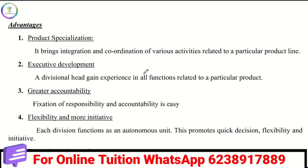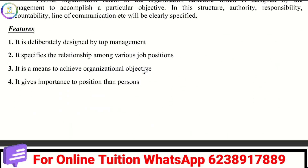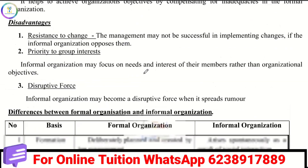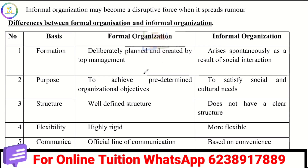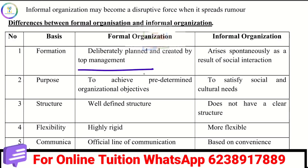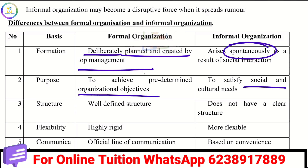Another important question is the difference between formal and informal organization. Formal and informal are the two types of organizations. Formal organization is created by top management as a planned structure with defined roles and objectives. It is considered the ideal form of organization.